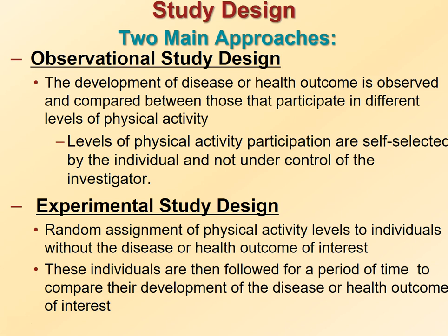Random assignment, or randomization, implies that each individual has the same chance of being in any of the available study groups. The randomization process removes any potential clinician and/or patient biases about who receives the physical activity intervention. Also, randomization ensures equal distribution of potential confounding variables such as age, body mass index, etc. among exposure groups. This equal distribution of confounding variables leads to a clearer picture of the association between physical activity and the disease or health outcome of interest.